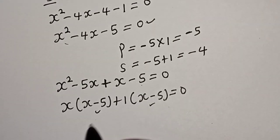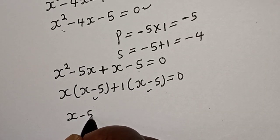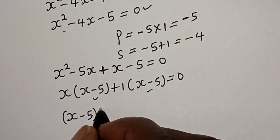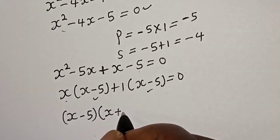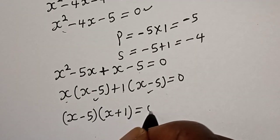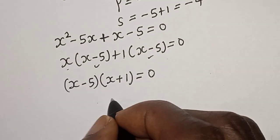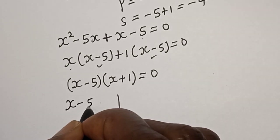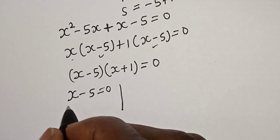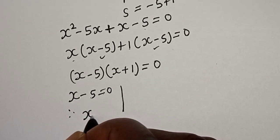Now s minus 5 is common. We have s minus 5, times s minus 5, is equal to 0. Therefore, factoring this gives us bracket s minus 5 times bracket s plus 1 equals 0.